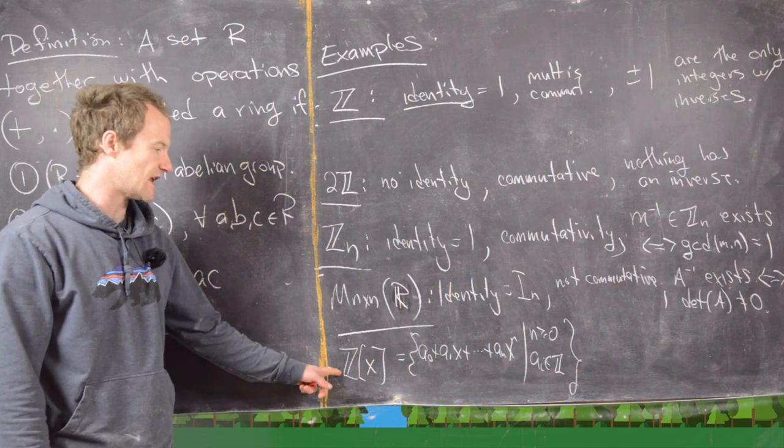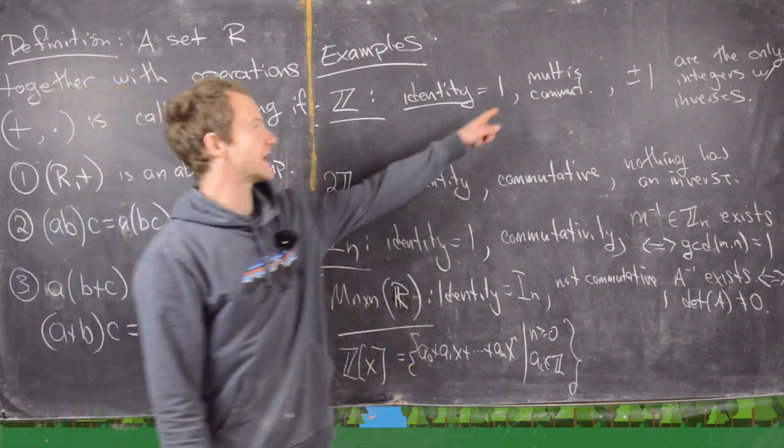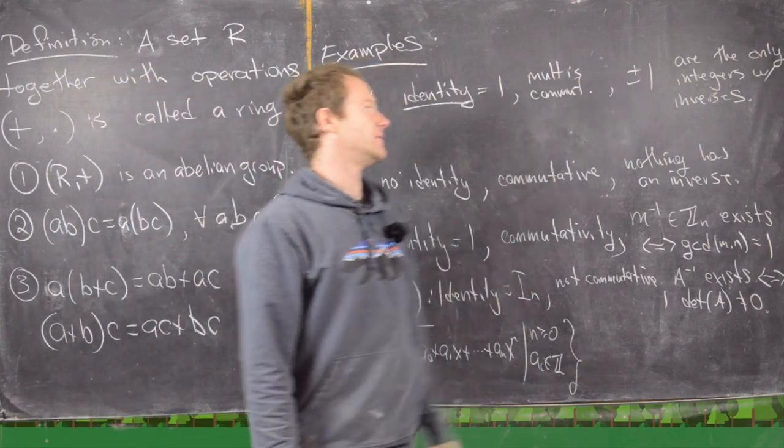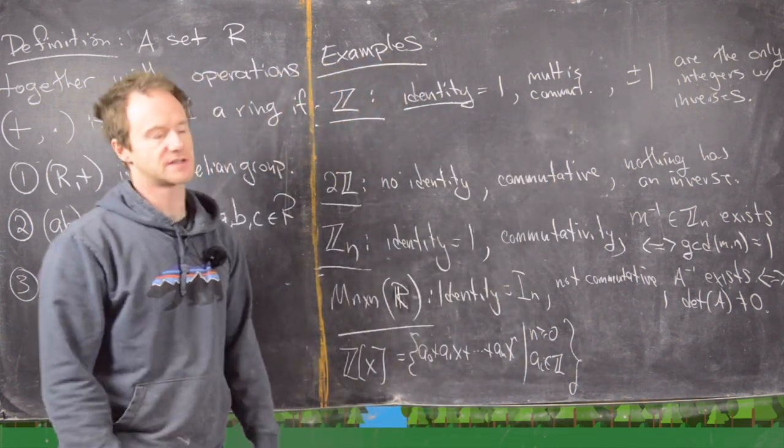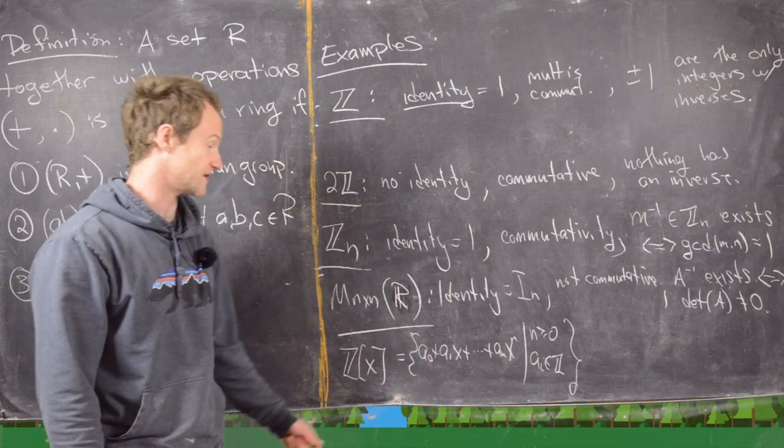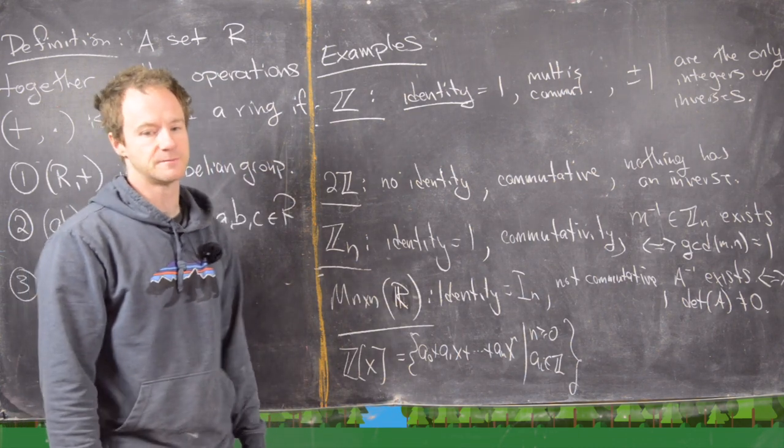And I guess I should say that here the identity is one again. The multiplication is commutative. And then these are going to be the only things that have inverses. So I won't check that, but that's easy to check that those are the only things that have inverses. Nothing that is a polynomial of a higher degree will have an inverse.